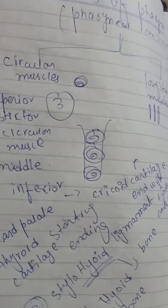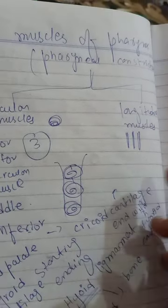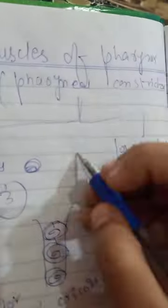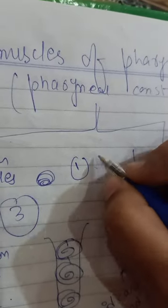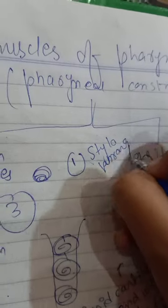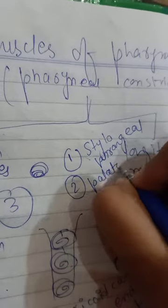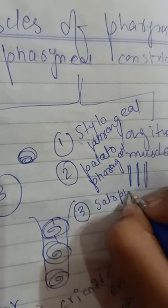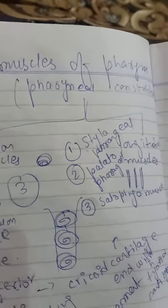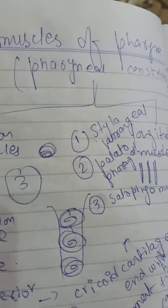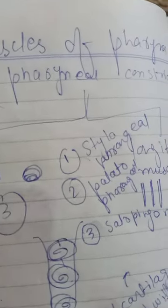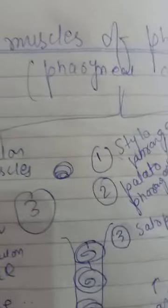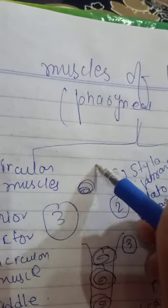The longitudinal muscles are different from the circular muscles. They also have three types: number one is the stylopharyngeal muscle, second is the palatopharyngeal muscle, and the third is the salpingopharyngeal muscle. The function of the longitudinal muscles is to elevate the pharynx — these longitudinal muscles basically close during swallowing.